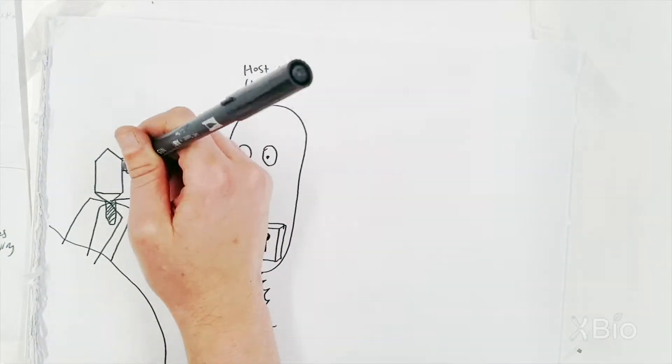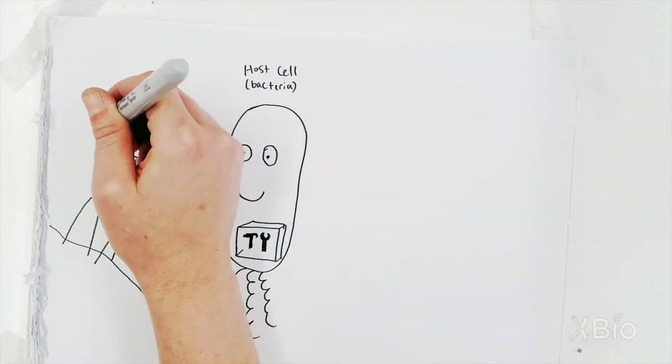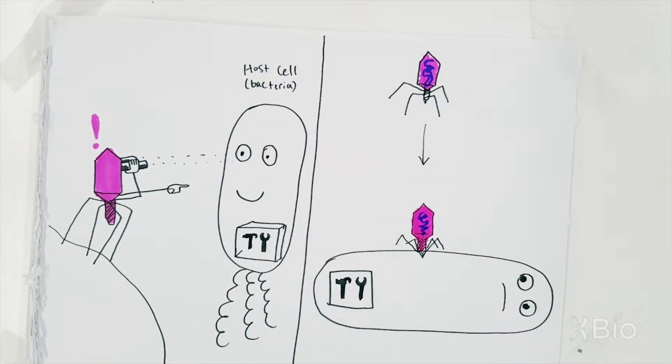Viruses infect cells, the basic unit of life, which have all the tools the virus needs to copy itself. To get at the cell's tools, the virus first needs to put its genetic material inside of the host cell.